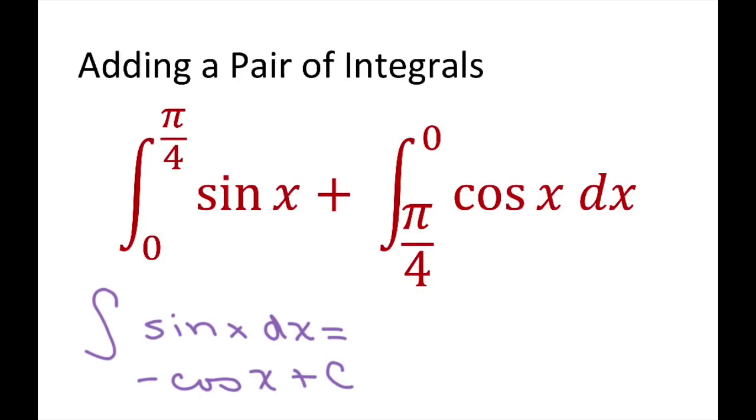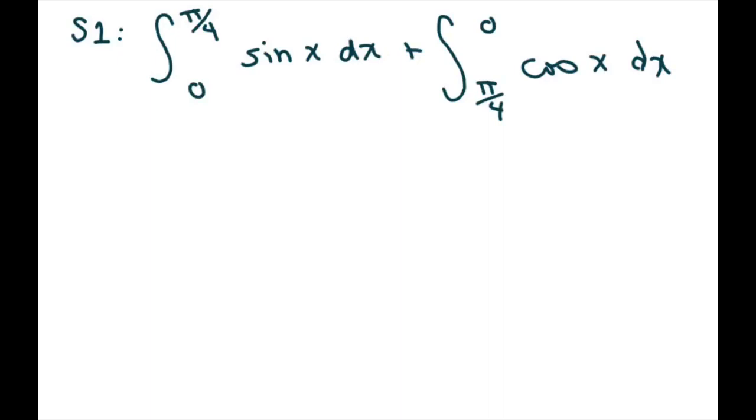And for cosine, the antiderivative of cosine of x dx is just going to be sine of x plus c. So we'll get started and what we're going to do is just evaluate this.